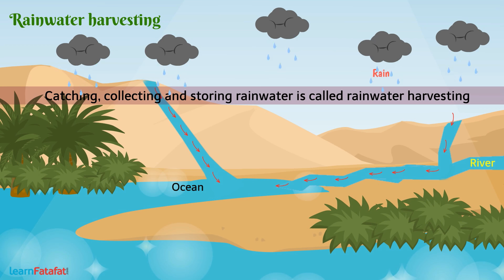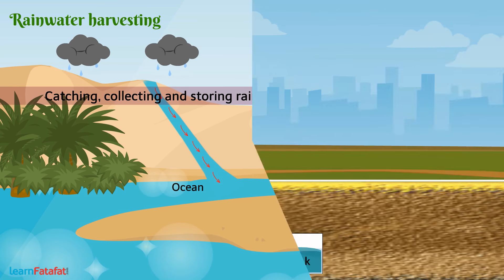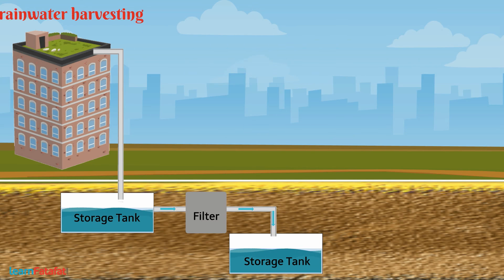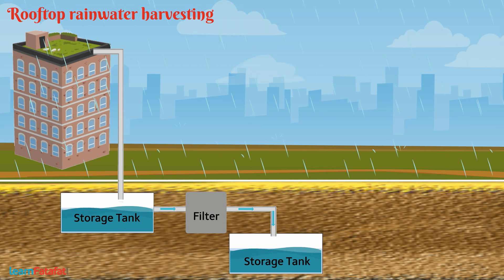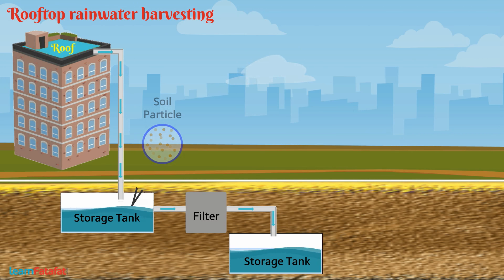There are two methods which we can use for this purpose. The first is rooftop rainwater harvesting. During raining, rainwater gets collected on the rooftop. It can be transferred to a storage tank through a pipe.